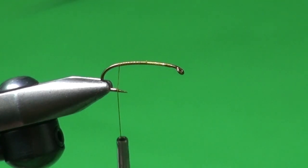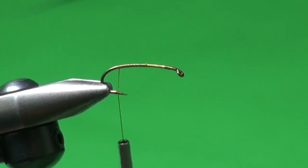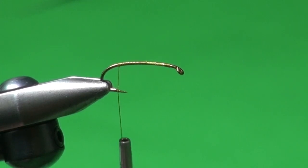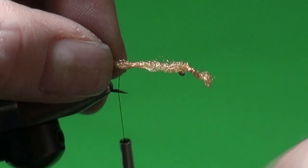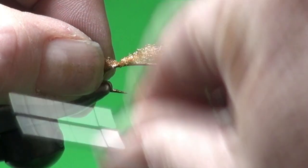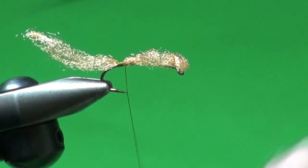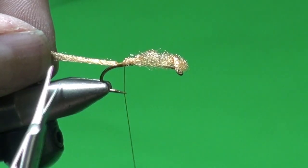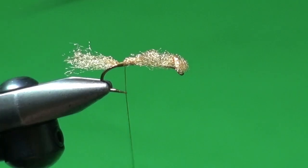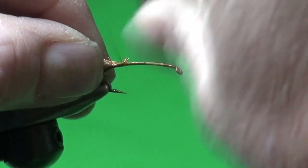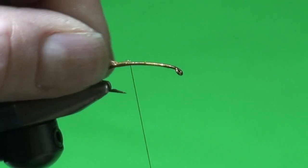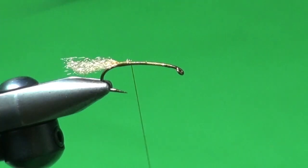So I've got the shank covered with tying thread, in this case 140, UTC 140. And we're going to put a little amber sparkle yarn tail on this to represent the shuck, the cast shuck of a traveling sedge. It also helps create some wake. We want to trim that about half the shank length long or so and trim off the excess. And the sedge pupa shucks are a bronzy amber coloration. You'll see them sitting on the water. It also adds a little bit of buoyancy.